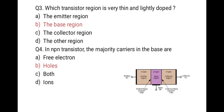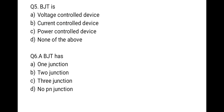The next question is: BJT is — first, a voltage control device; second, a current control device; third, a power control device; last, none of the above. The correct option is that BJT is a current control device.